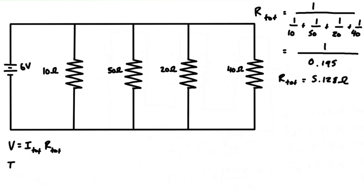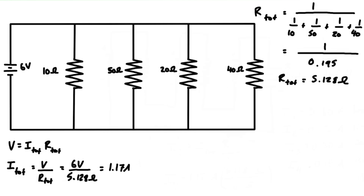We rearrange so that I_total is equal to the voltage drop over the total resistance. Plugging in the values, we have 6 volts over 5.128 ohms, which gives us a total current of 1.17 amps.